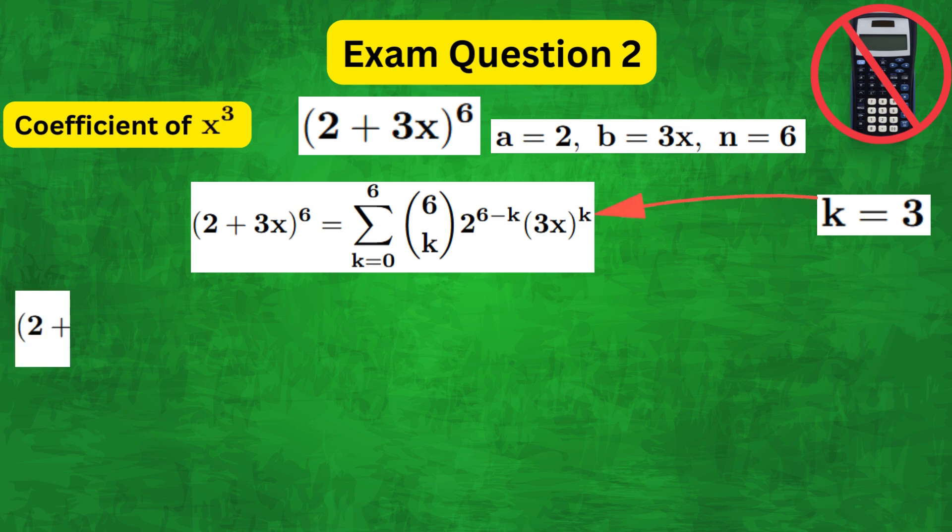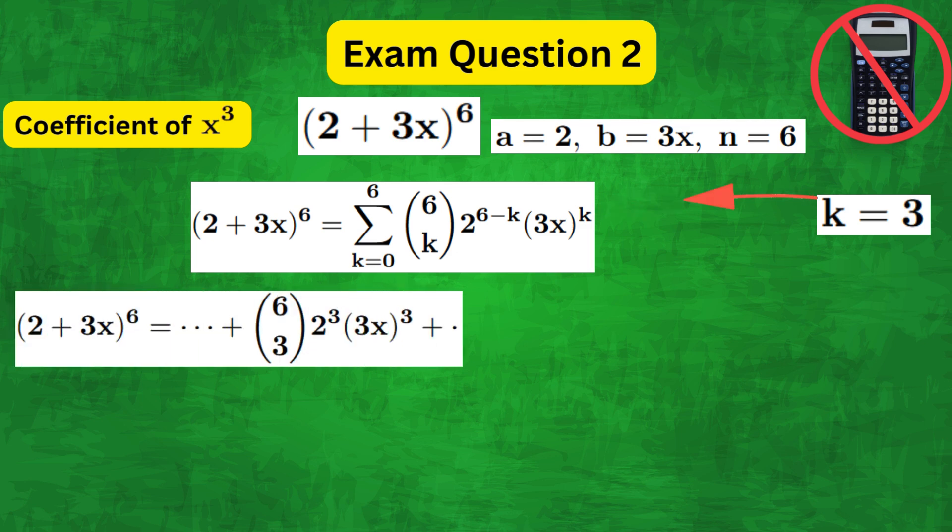So that means the x cubed term can be written as 6 combination 3, 2 to the power of 3 times 3x whole to the power of 3.